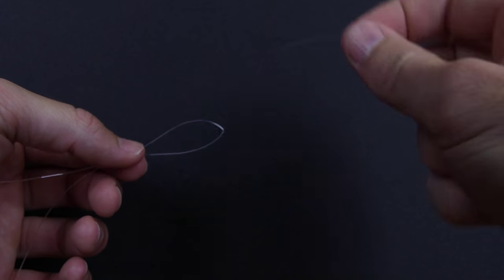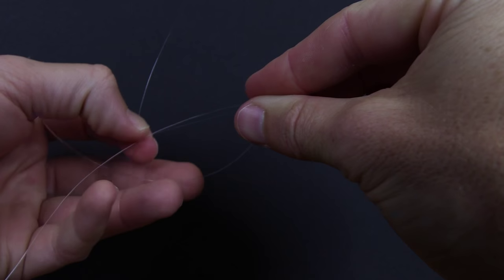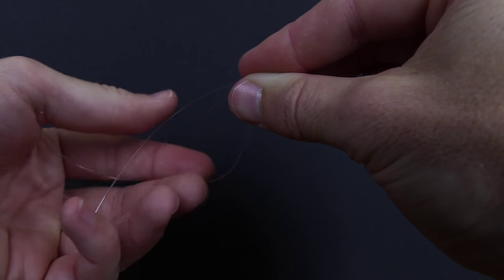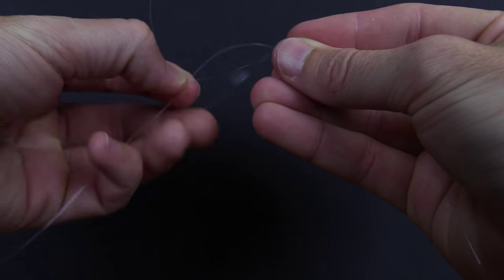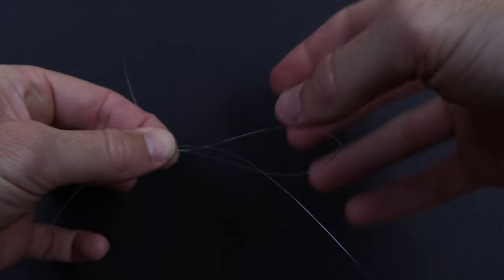Now with our lighter line we're going to go through that from the front, go through that loop, and I like to have about six inches again of tag line sticking up. I'm going to lock all three lines down with my left hand.